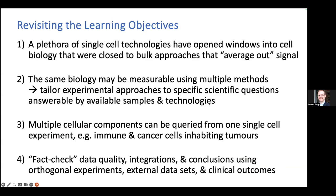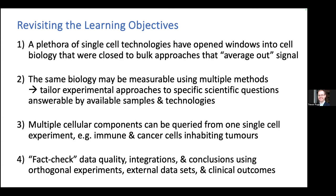There are lots of ways to generate single-cell data. You can now look at cell biology at a totally new resolution that you couldn't using bulk RNA sequencing. The same biology can be measured multiple ways — RNA, protein, full-length RNA, short reads. Tailor your experiment for the technology you have, the types of samples, and what's available locally. Be critical of your data, do a lot of QC, fact-check your biological conclusions, watch out for batch effects, and validate using orthogonal experiments — protein experiments, CRISPR screens, clinical data, or optical techniques. RNA-seq is a tool; you need to validate the results you're getting out of it.